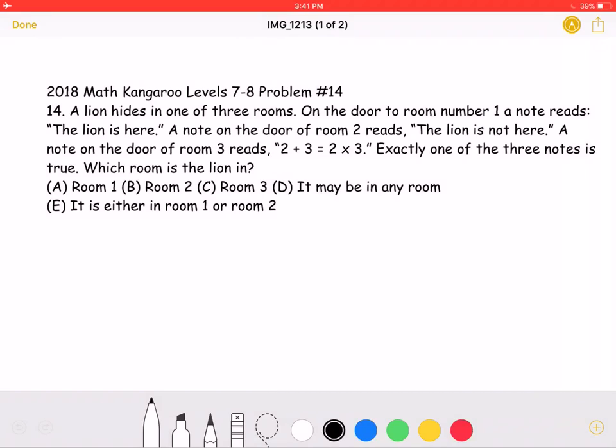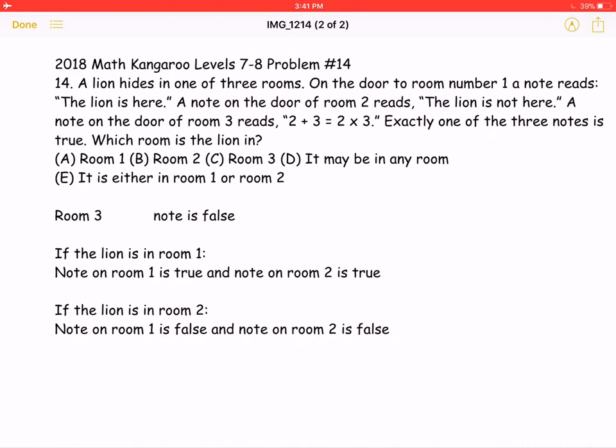A, room 1; B, room 2; C, room 3; D, it may be in any room; or E, it is either in room 1 or 2. This is the problem as it originally appeared on the test. Here is the version with the solution.